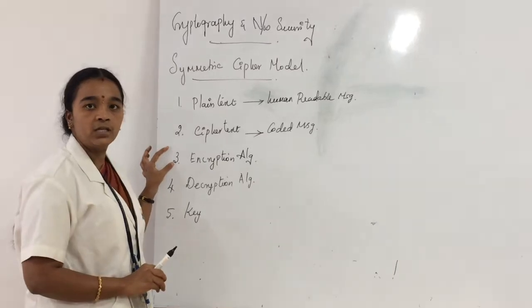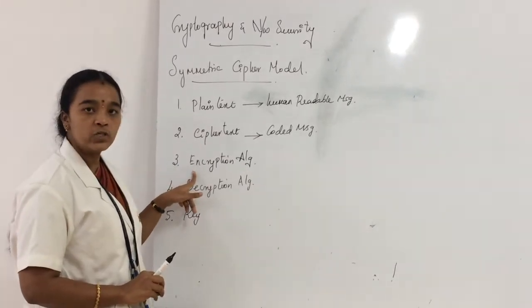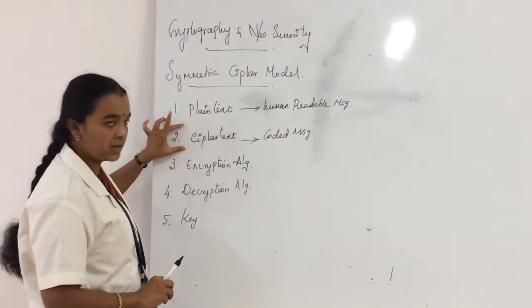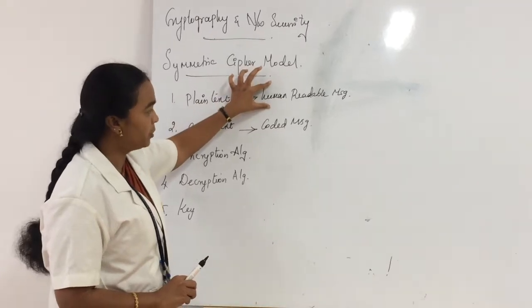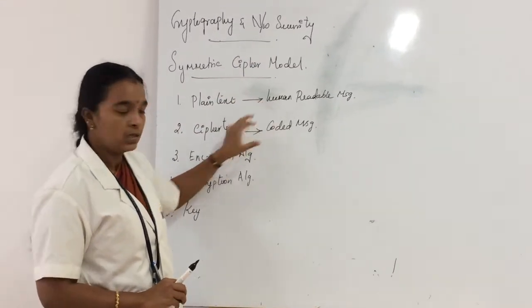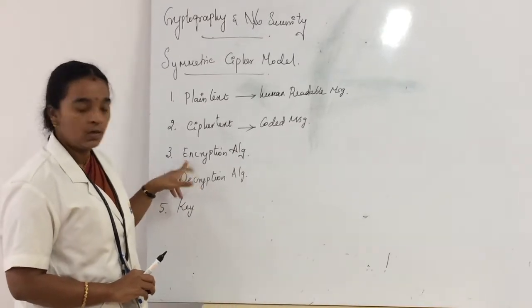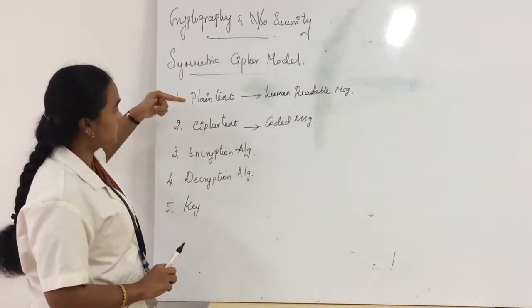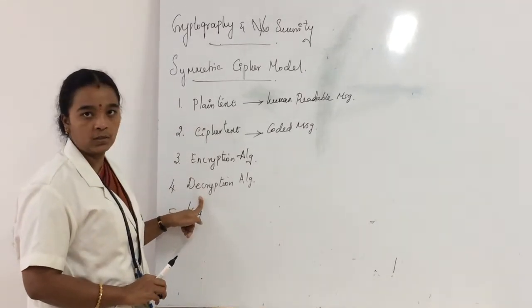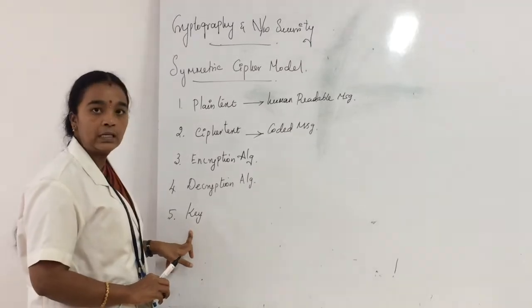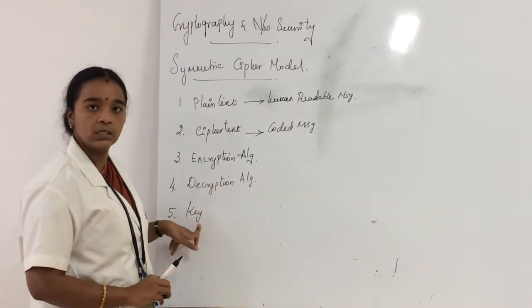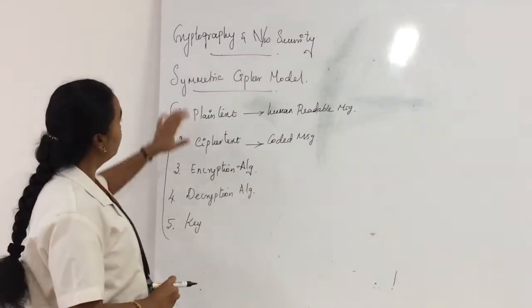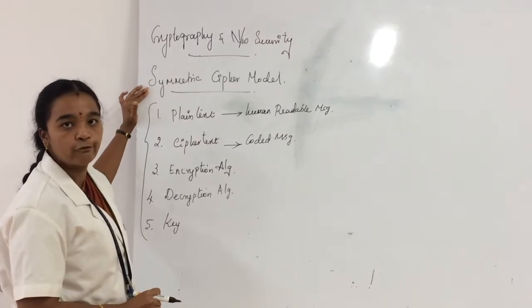Encryption Algorithm is the process of converting the Plain Text to Cipher Text — that is, human-readable form into a coded message. Decryption Algorithm is the conversion from Cipher Text to Plain Text. We are using a Key for secret purposes. These five terms we need to know before entering into the Symmetric Cipher Model topic.